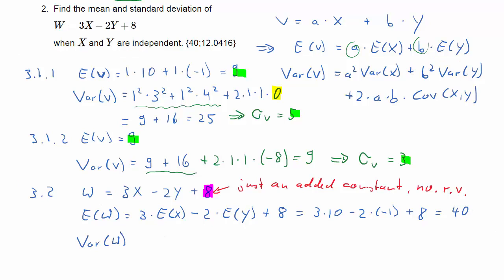So the expected value of W is 40. What about the variance of W? 3² times the variance of X plus (-2)² times the variance of Y. And then we need the covariance of X and Y. So 2 times 3 times -2, that's 2 times a times b, times the covariance of X and Y. And now we're being given the information that's independent, so that's going to be 0 again. That last bit is just going to be 0.